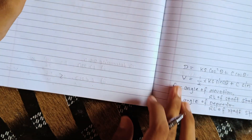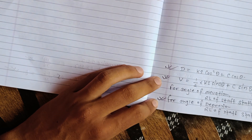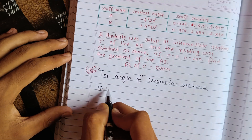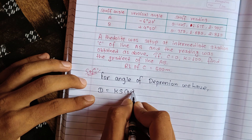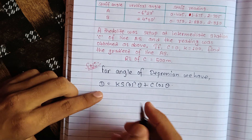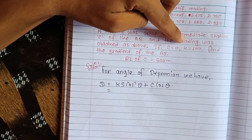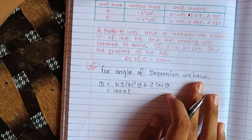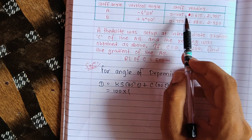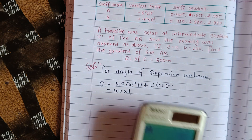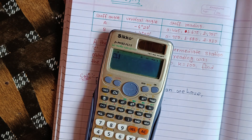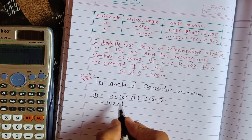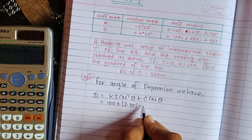For angle of depression, we use the D formula: D = ks·cos²θ + c·cosθ. First of all, find D. It is because the angle of depression gives us the D formula value. S equals upper reading minus lower reading, which is 2.905 minus 0.445, giving one point — so upper minus lower reading.